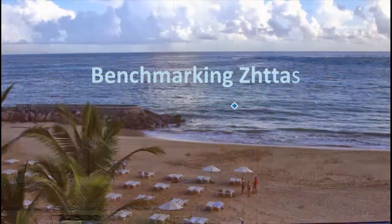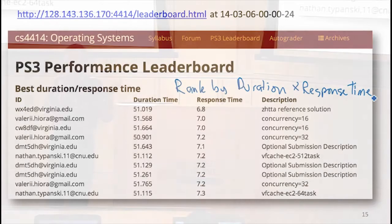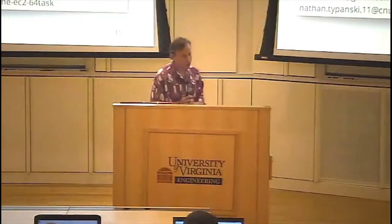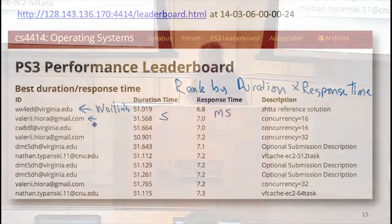What about benchmarking your servers? These were the results as of midnight when the deadline was. They're being ranked just by the product of these two, which is definitely an arbitrary way to rank things. You could weight these things differently. If you use different units, that product would mean different things. The response time is in milliseconds and the duration is in seconds that it takes to run the whole test. The top ones as of midnight were Wayland's reference solution and someone who is not a UVA student.